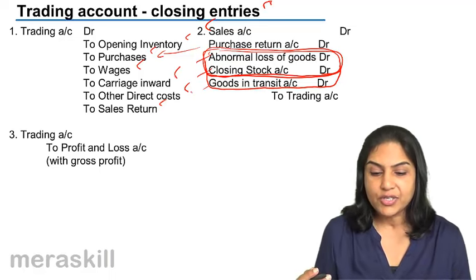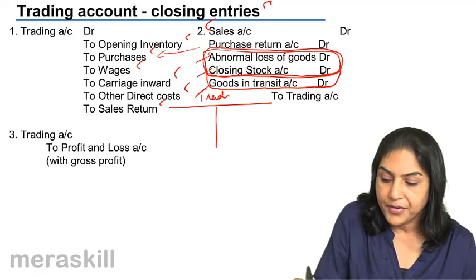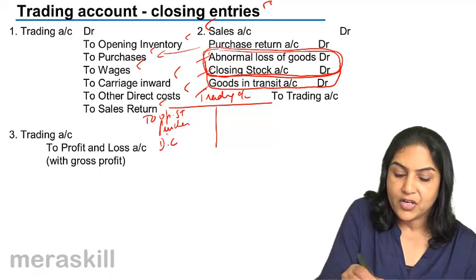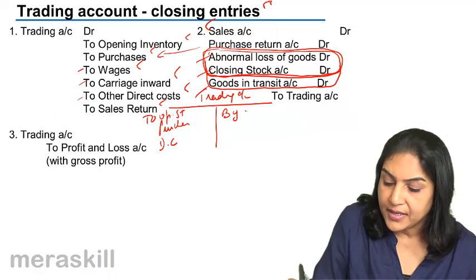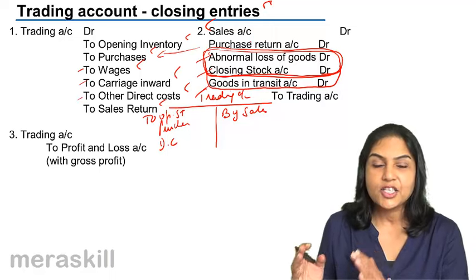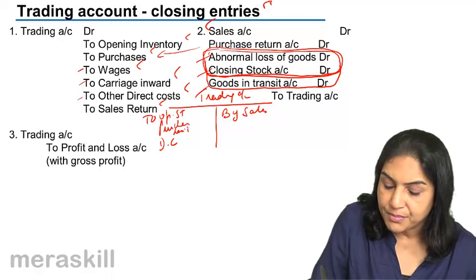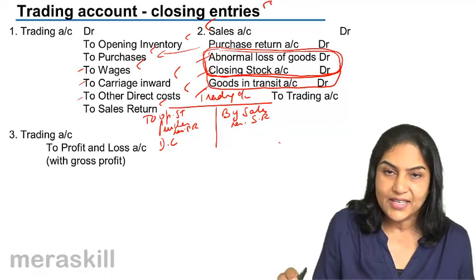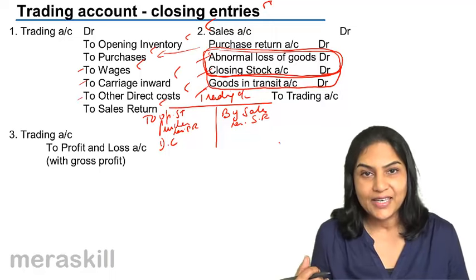So what are the closing entries? Trading account is debited to opening stock, to purchases, and to all direct costs — whether it's wages, carriage inward, or other direct costs. We don't debit it to sales return directly. Instead, the sales account is debited and transferred to the trading account, since it is an income account with a credit balance. Purchase return is shown as a deduction from purchases, and sales return is shown as a deduction from sales, rather than taking purchase return to the credit side or sales return to the debit side of the trading account.